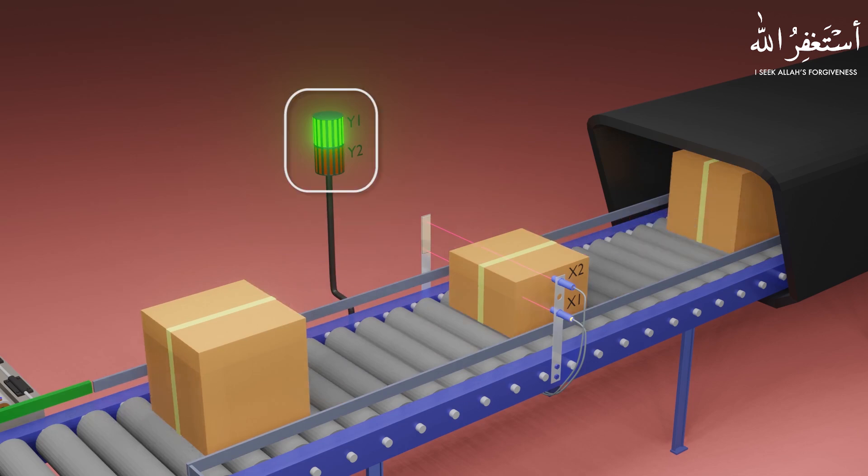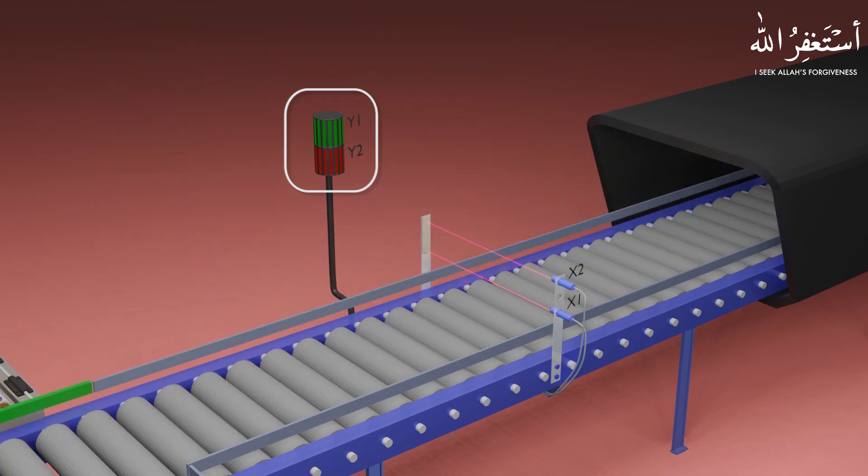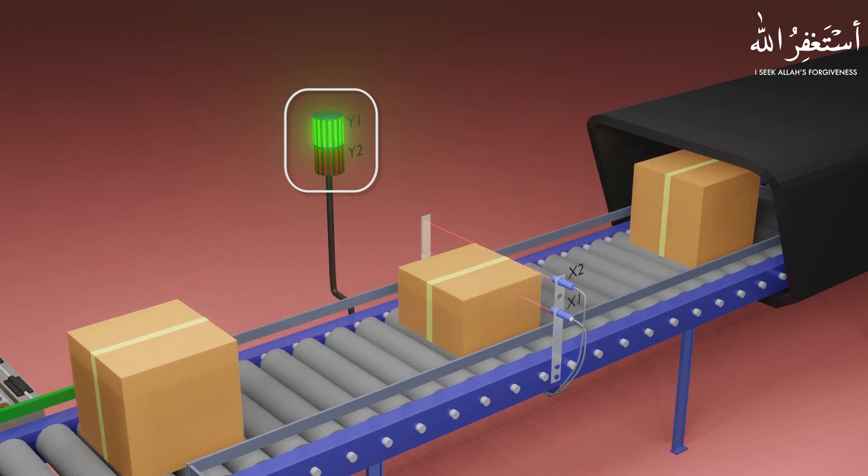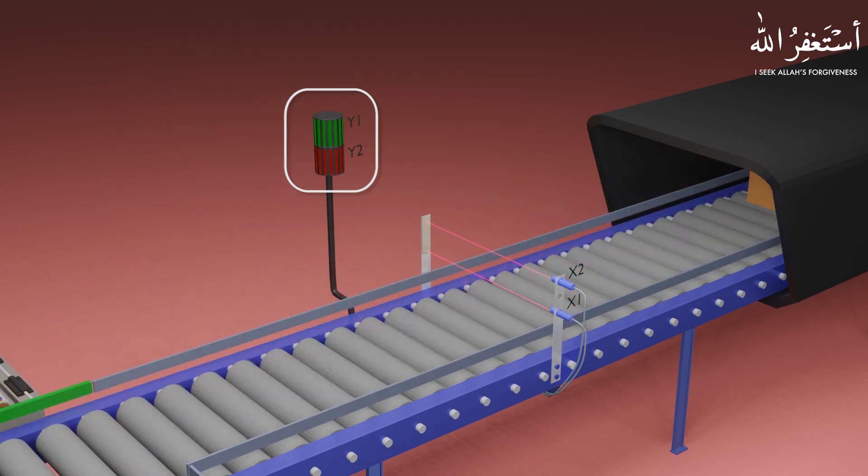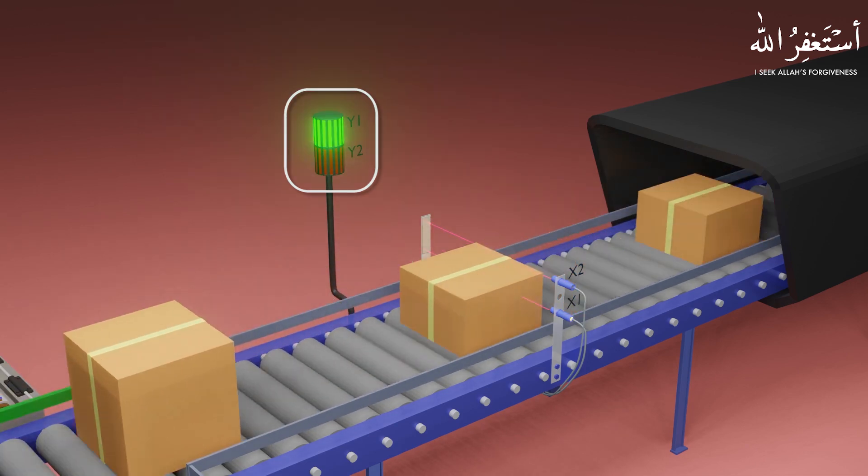There are two lights, red and green. The red light is connected at Y2 PLC output and will turn on when the large box comes in front of sensors X1 and X2. The green light is connected at Y1 PLC output and will turn on when sensor X1 detects a small box.